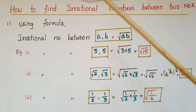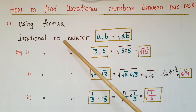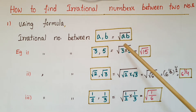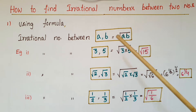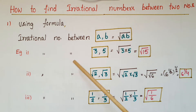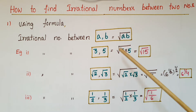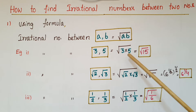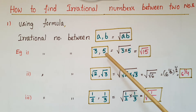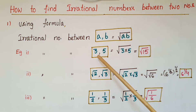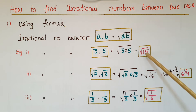First method is using the formula. If we want to find an irrational number between a and b, it is equal to root of ab. So, the irrational number between 3 and 5 is equal to root of 3 into 5, that is equal to root 15.